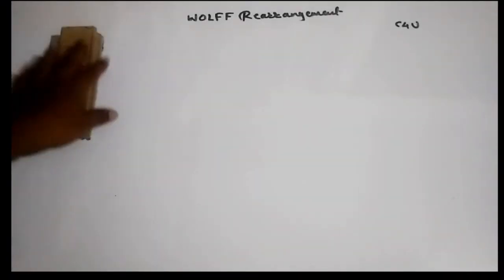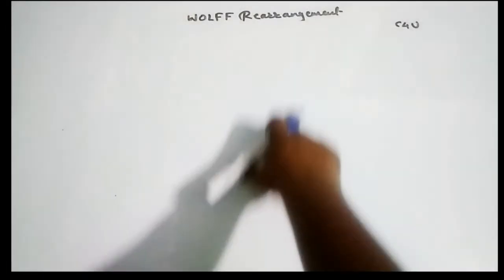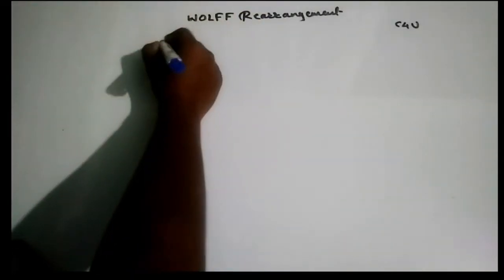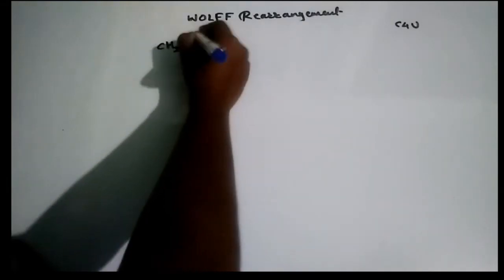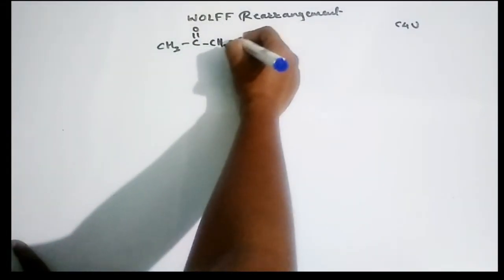Hello friends and welcome back to C4U. This video is about Wolff rearrangement, its mechanism, and some problems we will solve. Basically, Wolff rearrangement is the reaction of alpha diazo ketones or alpha diazo carbonyl compounds.